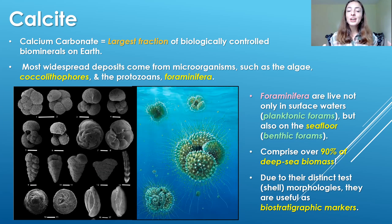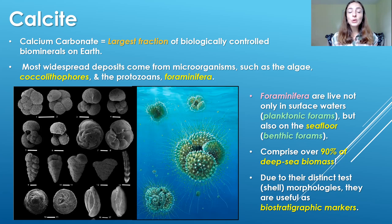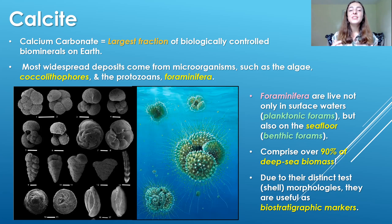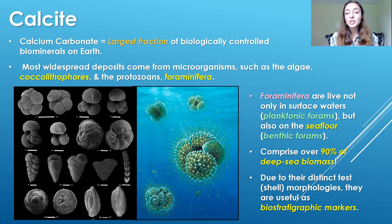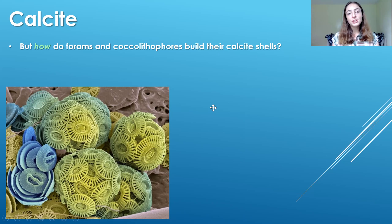What about forams? Forams can live at the surface water, but because they don't have to photosynthesize, they can also live on the seafloor. The ones that live in the water column are planktonic forams, and the ones that live on the seafloor are benthic forams. These forams can comprise over 90% of deep sea biomass — that's insane. And due to their distinct shell morphologies, they've been widely used as biostratigraphic markers. But how do forams and coccolithophores actually build their calcite shells?